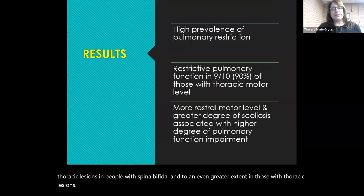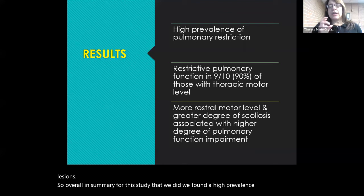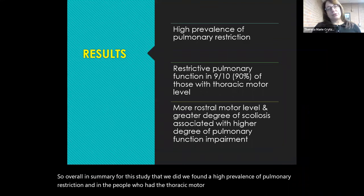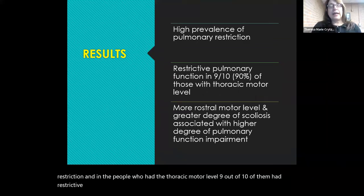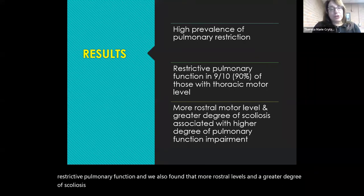Looking at the histogram comparing lumbosacral and thoracic neurological levels to predicted normal: predicted normal total lung capacity is 5.26 liters, whereas lumbosacral is 4.31 and thoracic is even lower at 3.01. Total lung capacity is reduced for both lumbosacral and thoracic lesions, to a greater extent in thoracic. In summary, we found high prevalence of pulmonary restriction — nine out of ten people with thoracic motor level had restrictive pulmonary function — and more rostral levels and greater scoliosis were associated with greater pulmonary impairment.